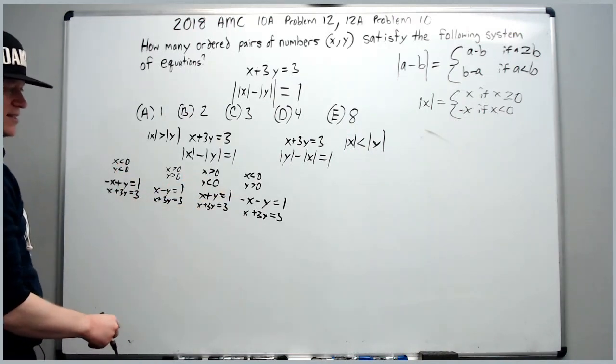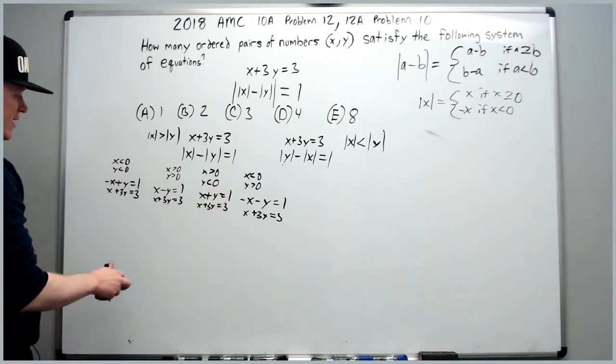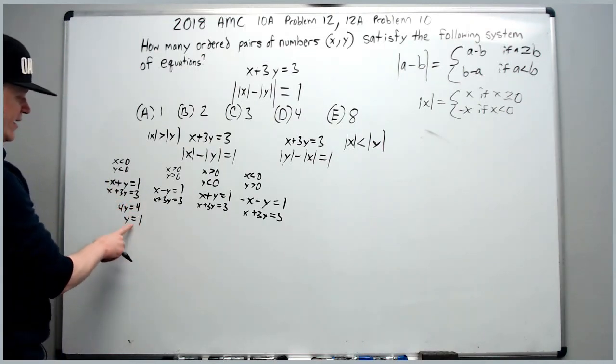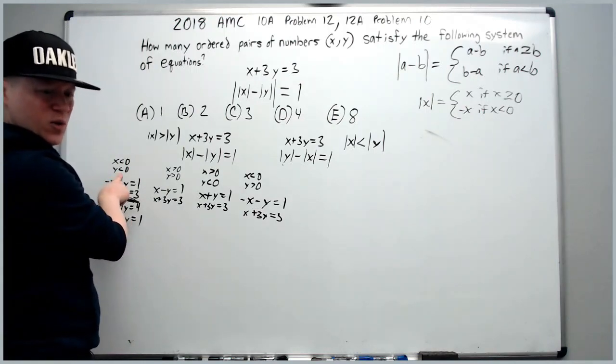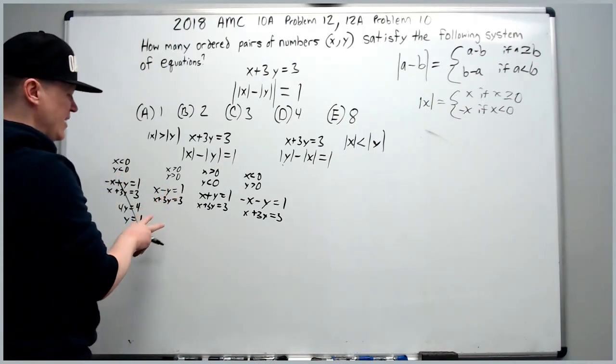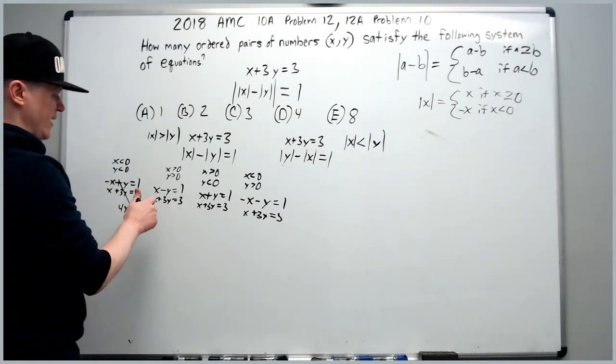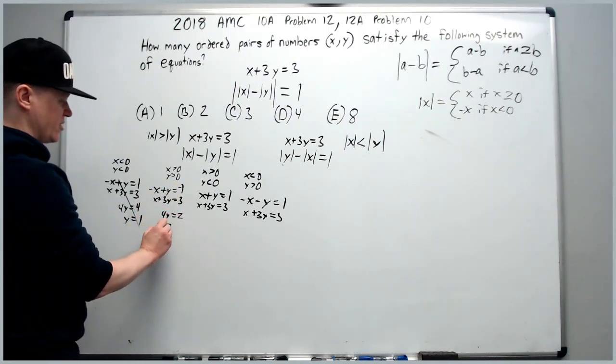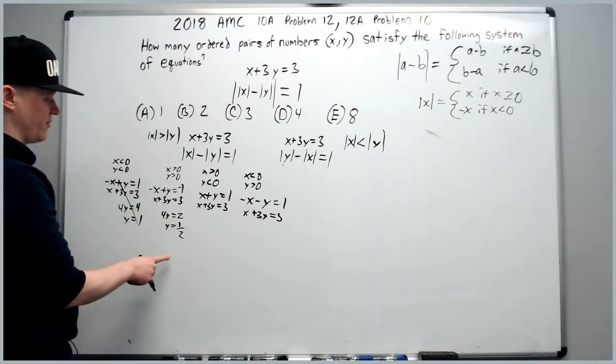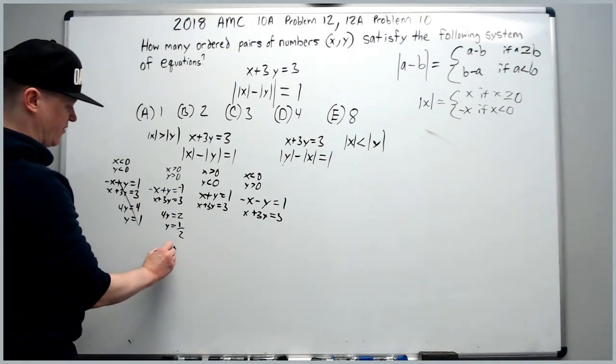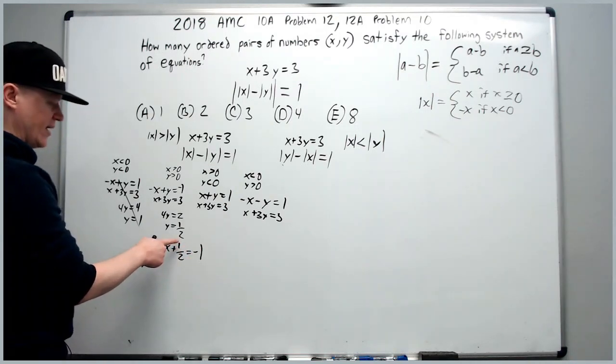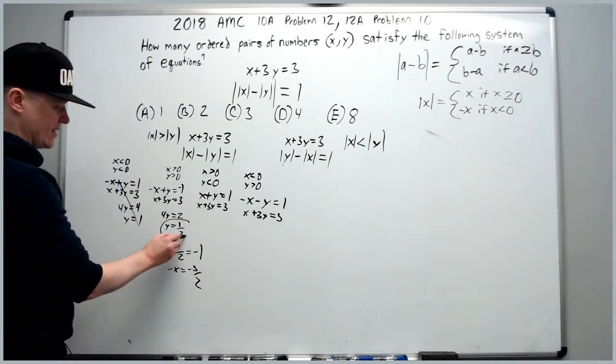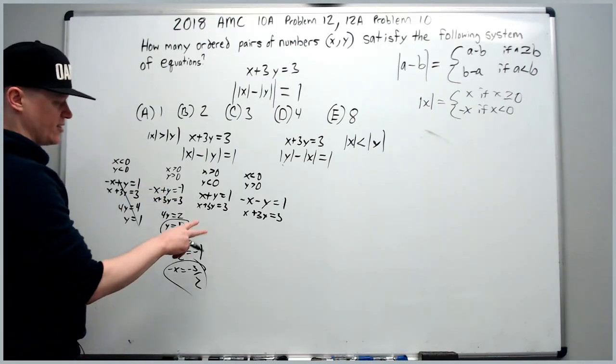So you're just going to solve all of these systems and make sure they obey the constraints. So for this one here, we're going to add straight down to get 4y equals 4 and y equals 1. That doesn't work because it says that y is less than 0, so we disregard this. If you're smart about it, it can still go fairly quick. Run a negative through this one - add down to get 4y equals 2 and y will equal 1 half. That is greater than 0. Plug back in now to get negative x plus a half equals negative 1. Subtract a half to get negative x equals negative 3 halves and you get x equals 3 halves. That is a solution because they're both greater than 0.